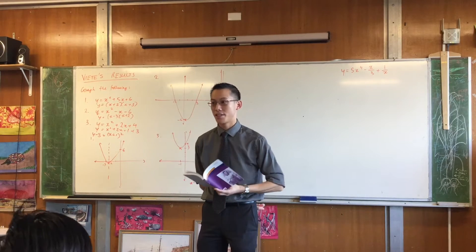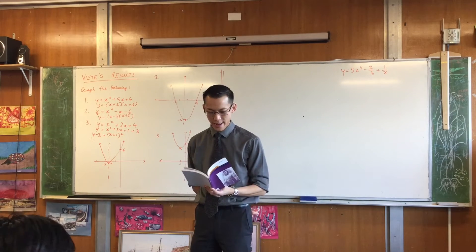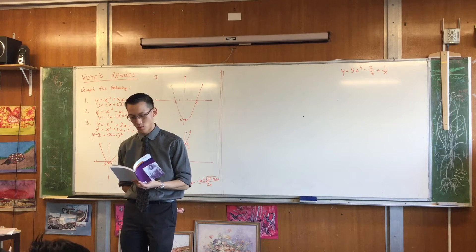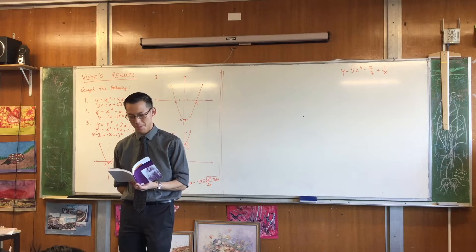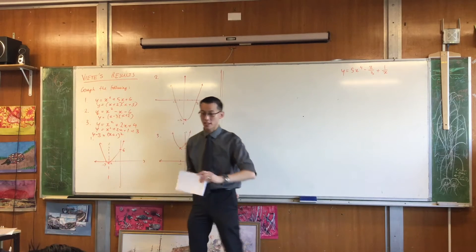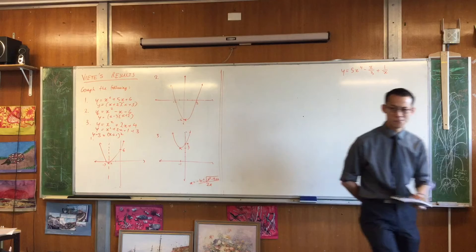Let alpha and beta, those are Greek letters, let alpha and beta be the roots of the quadratic equation x squared plus x minus 1 equals 0. Find the value of alpha to the power of 6 plus beta to the power of 6. What are you going to do with that?